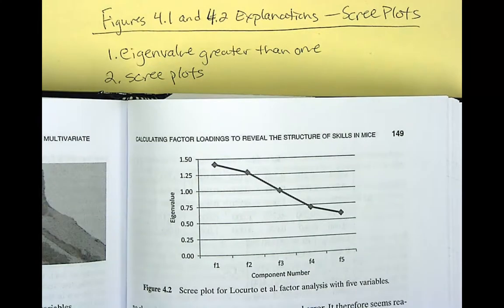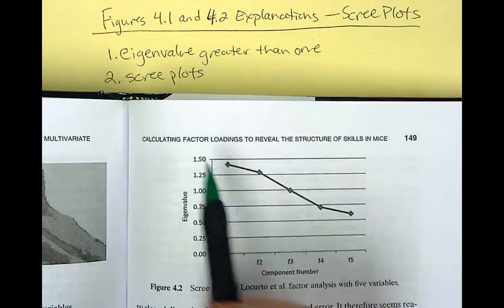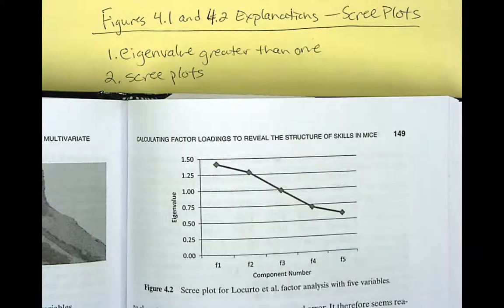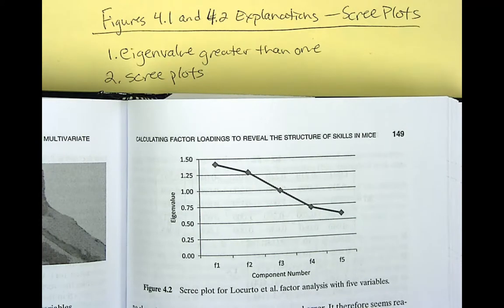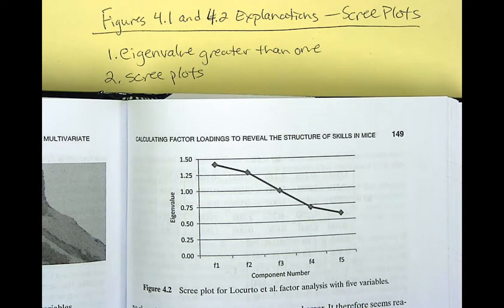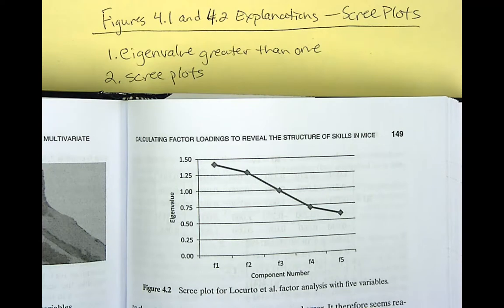So the scree plot for Locurto et al. factor analysis with five variables. So obviously, this one's a little more difficult because you don't see any knee here. No clear delineation between factor structure and error. So therefore, it seems more reasonable to go with the eigenvalue greater than one criterion, as we did before.